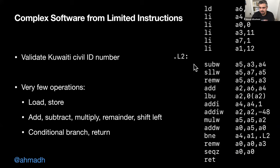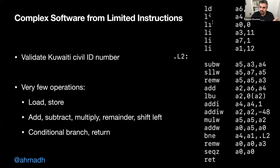To localize this: here's assembly code that checks whether a Kuwaiti civil ID is valid by doing checksum checking. You have very few simple instructions like load, subtract, shift, and remainder — and from those same simple building blocks you can create an infinite number of software programs of growing complexity.